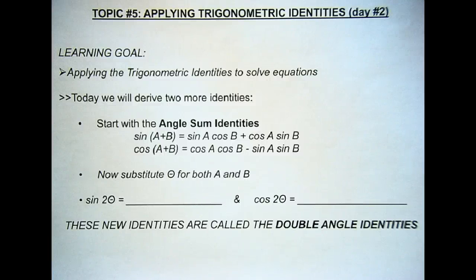This is the second day of Topic 5. We're deriving two more identities, the double angle identities. There are also half angle identities we won't get into today, but those will be all the identities that we go through.